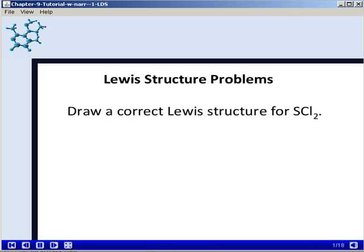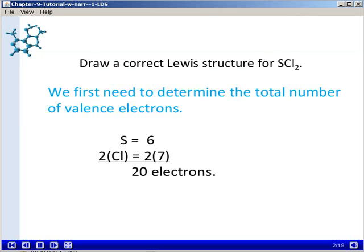This tutorial will give you some practice with drawing Lewis structures for covalently bonded molecules and ions. The first one asks us to draw a correct Lewis structure for SCl2. First, we need to determine the total number of valence electrons that will be represented as dots in our Lewis dot structure.